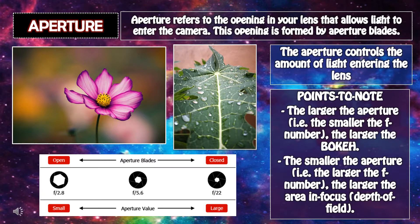Points to note: The larger the aperture, the smaller the F number, and the larger the bokeh. The smaller the aperture, the larger the F number, and the larger the area in focus — known as depth of field.